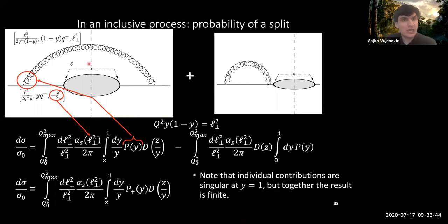However, there's also a virtual correction that you can add to this diagram, which I give over here. And that also has a divergence that is present also at y equals 1. And as it turns out, virtual corrections enter with a minus sign in such a way that the combination of these two is essentially giving you the probability of a split and that is actually now finite once you combine them together.